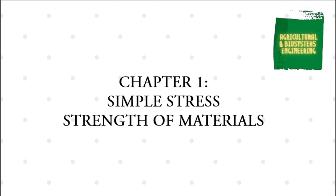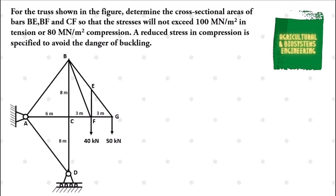In this video, we will be solving this problem. For the truss shown in the figure, determine the cross-sectional areas of bars BE, BF, and CF so that the stresses will not exceed 100 MN per square meter in tension or 80 MN per square meter in compression. A reduced stress in compression is specified to avoid the danger of buckling.